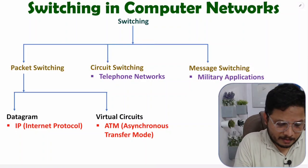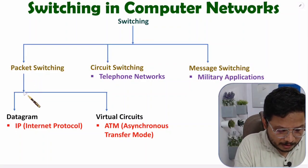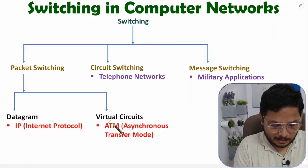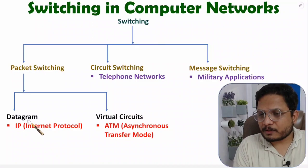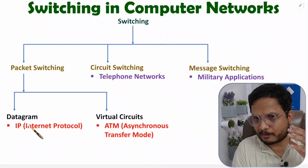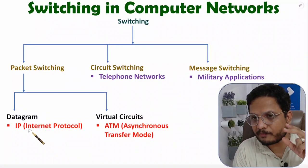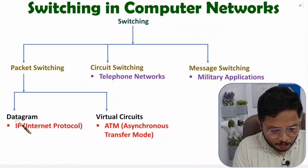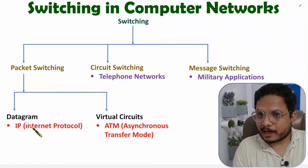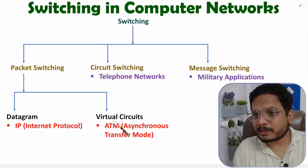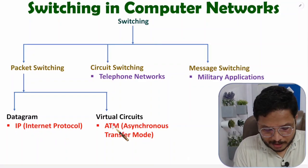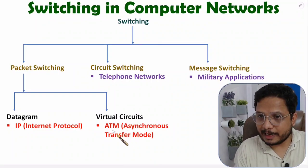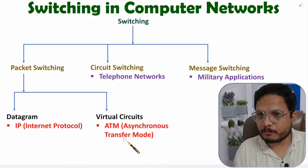With packet switching we have two further categories: datagram switching and virtual circuits. Datagram switching is what we are currently using in computer networks, like IPv4 and IPv6. Earlier versions of the internet were based on virtual circuits, where ATM protocol — that is, Asynchronous Transfer Mode — was used.